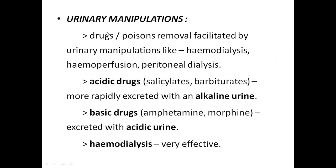Urinary manipulations can also remove poisons — methods include hemodialysis, peritoneal dialysis, and hemoperfusion. For acidic drugs like aspirin, salicylates, and phenobarbitone, giving sodium bicarbonate makes the urine alkaline, causing the acidic drugs to react with the alkaline urine and get excreted. For basic drugs like amphetamine and morphine, making the urine acidic allows them to mingle with the acidic urine and get excreted. Hemodialysis is a very effective final method.